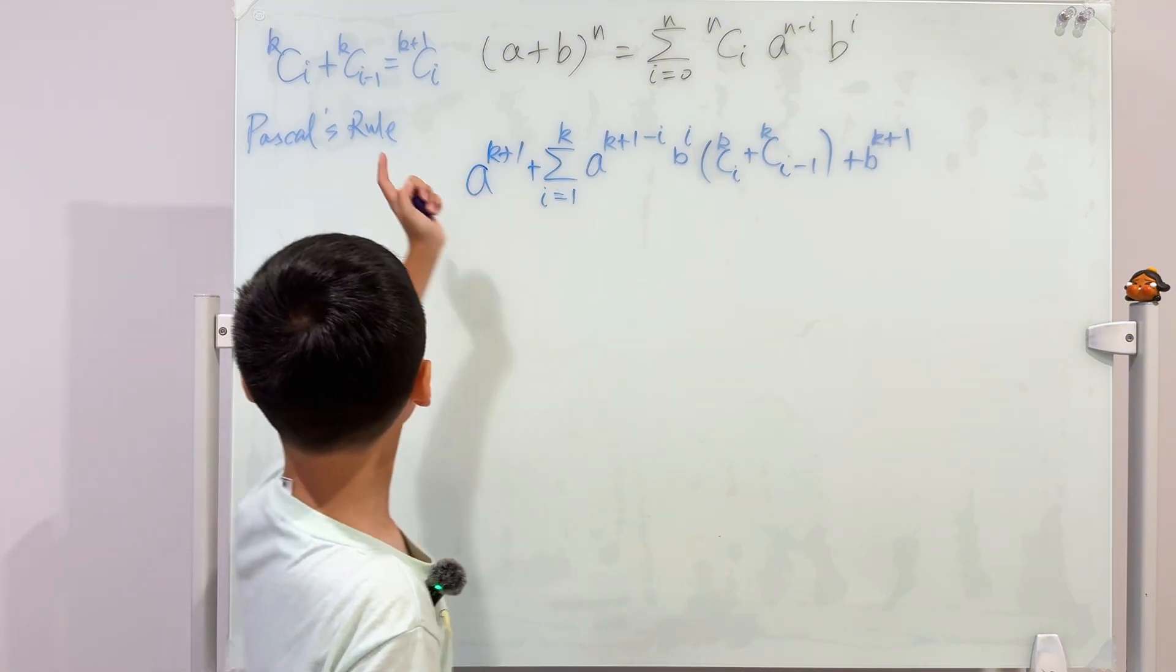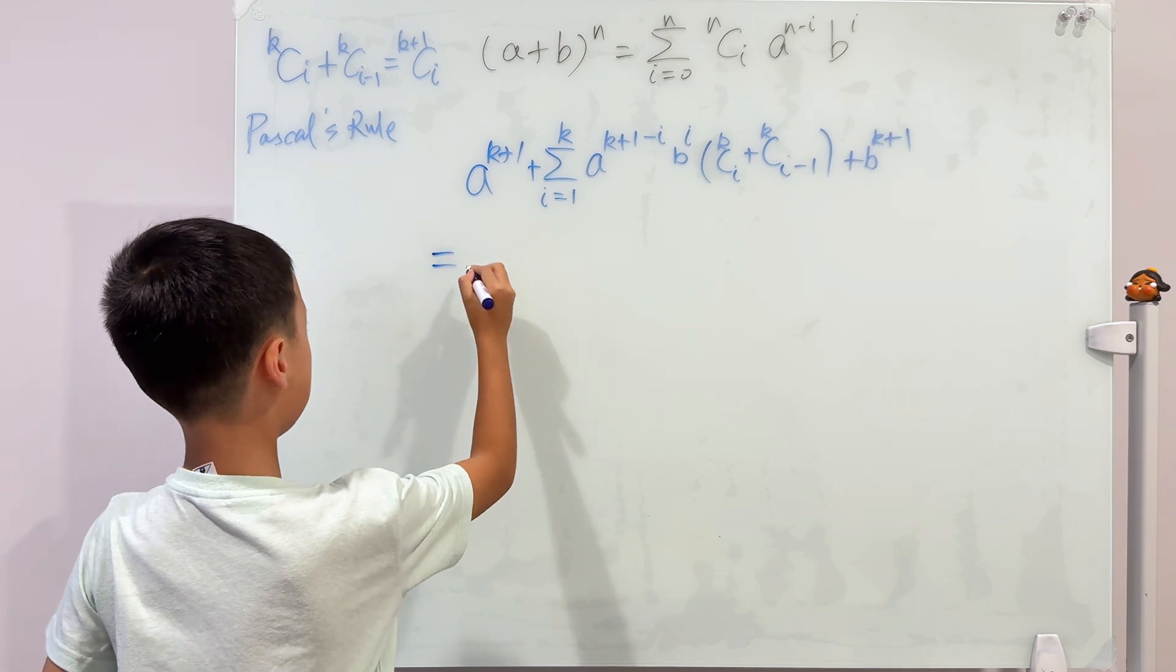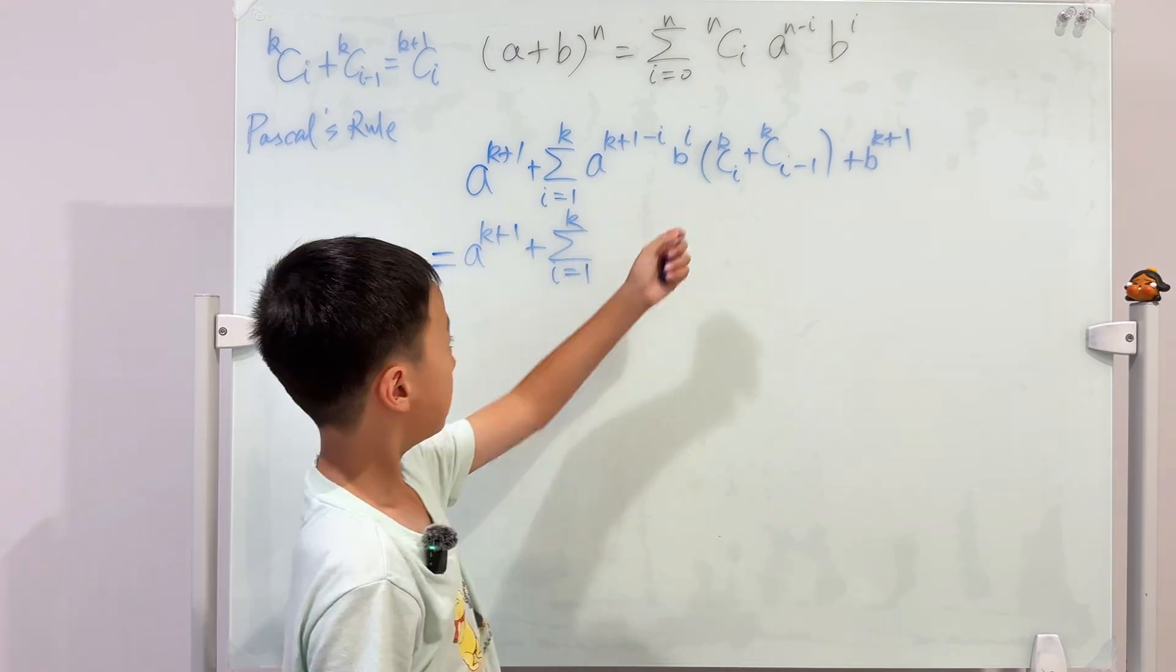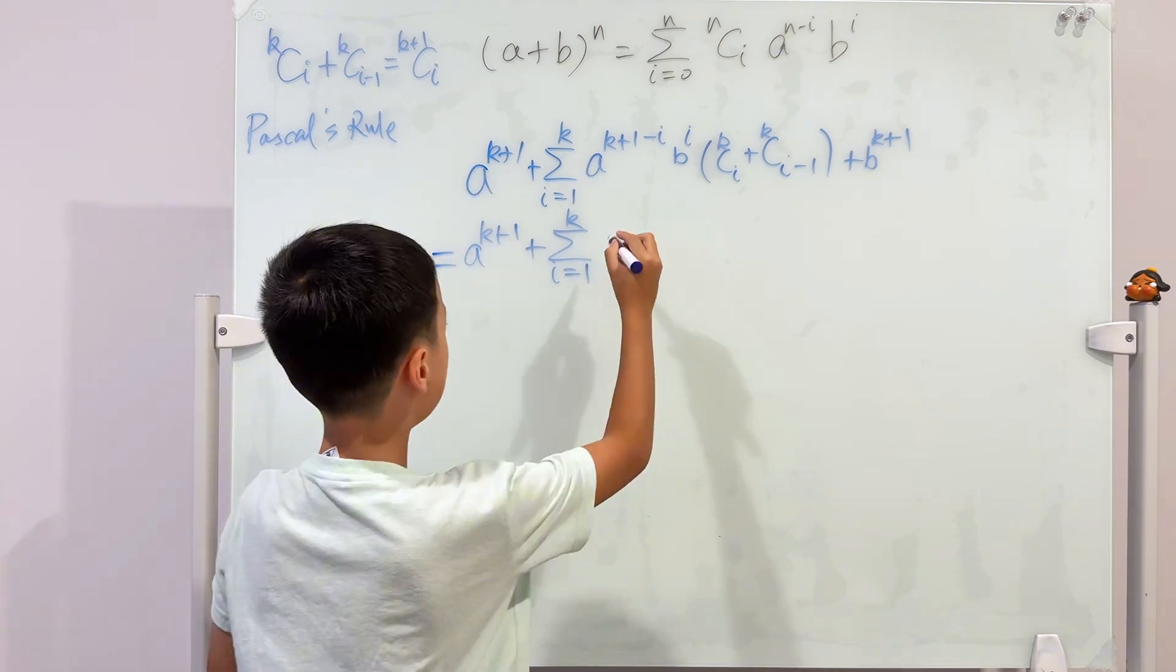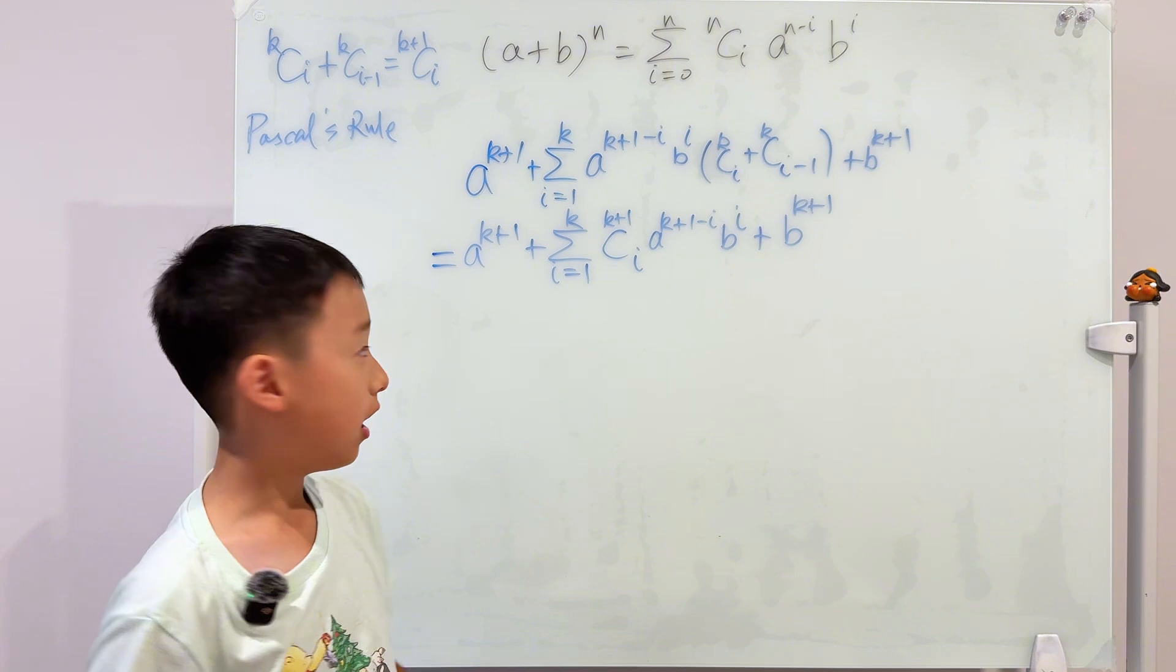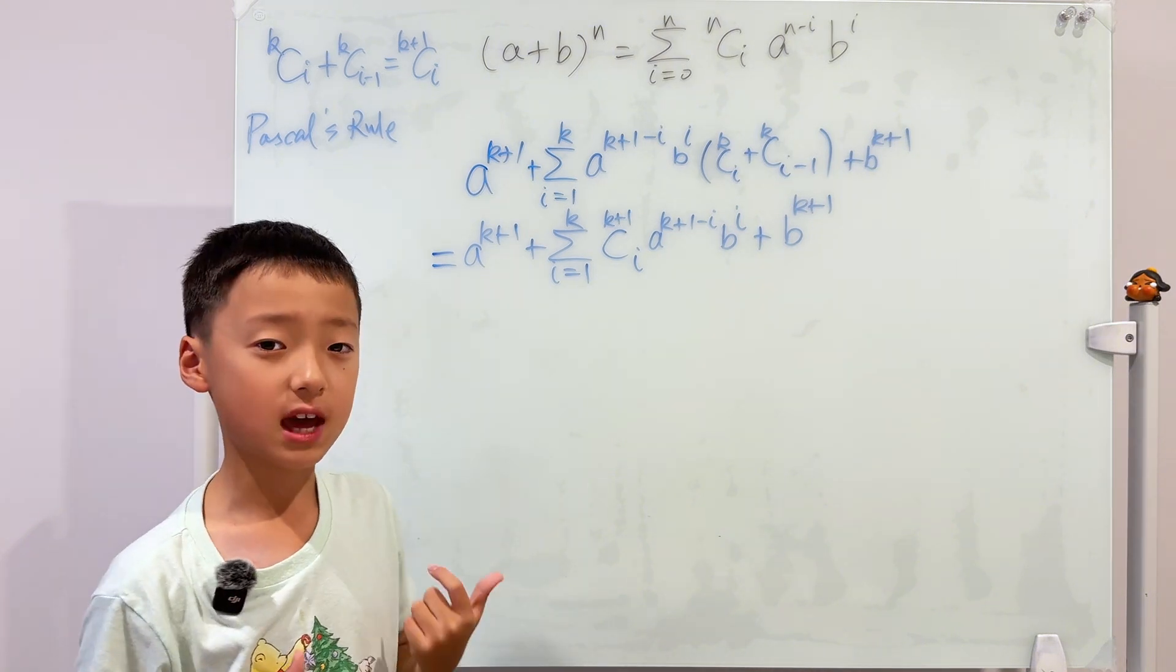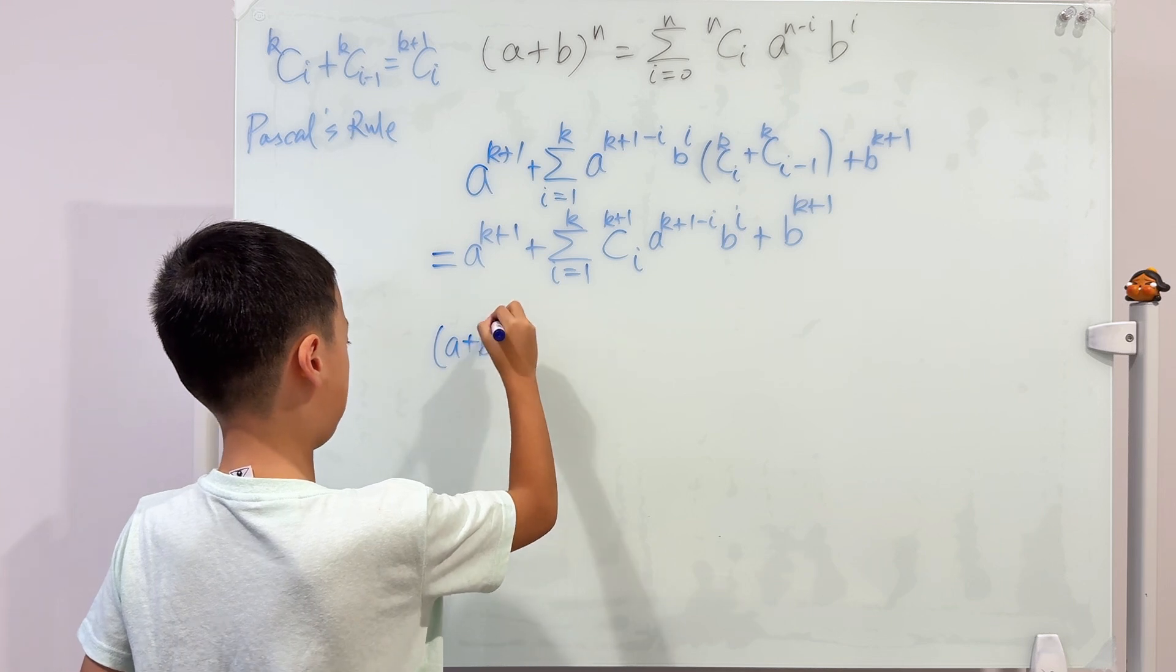From here I can change this into this using the Pascal's rule, so then it will become, and when I write this I'll put this at the front here. Now I'll write again what we had to prove. We had to prove that a plus b to the power of k plus one equal to...